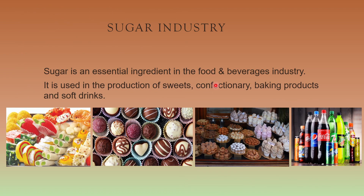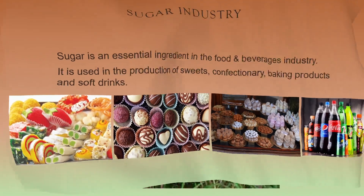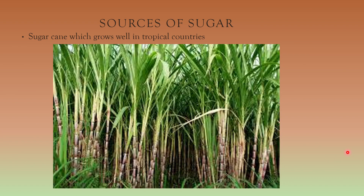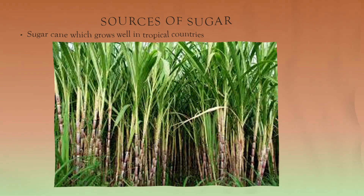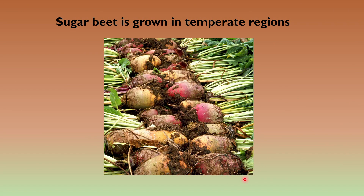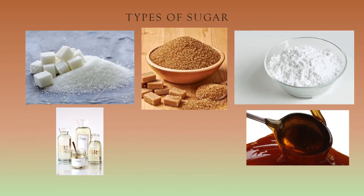Let us now move to the sugar industry. Sugar is an essential ingredient in the food and beverage industry, used in the production of sweets, confectionery, baking products, and soft drinks. Sugar is obtained from two sources: sugarcane, which grows well in tropical countries, and sugar beet, which grows well in temperate regions. The juice from sugarcane or sugar beet is squeezed out and processed into raw sugar, which is then refined into a range of sugar types.